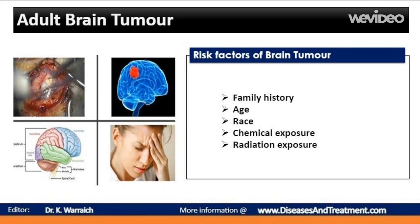Age is another risk factor — risk for most types of brain tumors increases with age. Race also plays a role: brain tumors in general are more common among Caucasians; however, African American people are more likely to get meningiomas. Chemical exposure is also a risk factor. Being exposed to certain chemicals, such as those you might find in a work environment, can increase your risk for brain cancer.